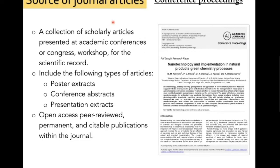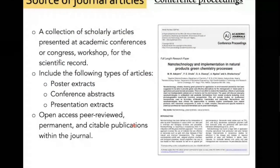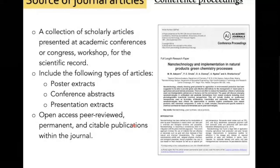The next type is the conference proceeding. When you attend a conference and submit a full research paper, you produce a conference proceeding. It is a collection of scholarly articles presented at academic conferences, congresses, workshops, or symposiums. It can include poster abstracts, conference presentation abstracts, or even full-length research papers. It is open, accessible, reviewed, permanently citable. I want you to have a comprehensive view of different types of journal articles, and I want you to pay attention mainly on review articles.